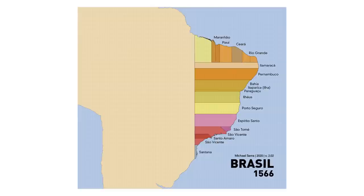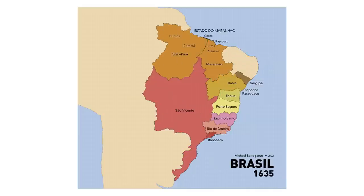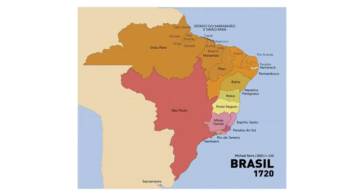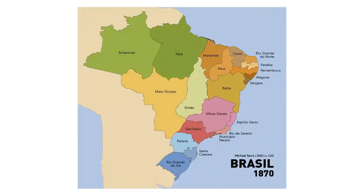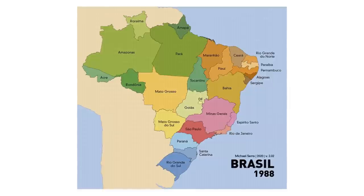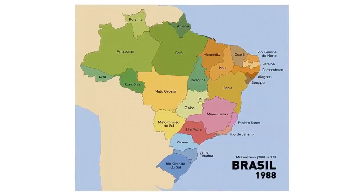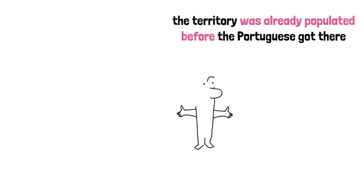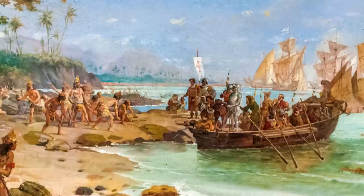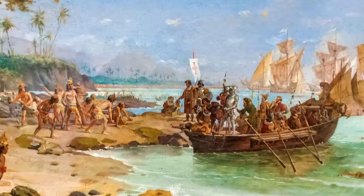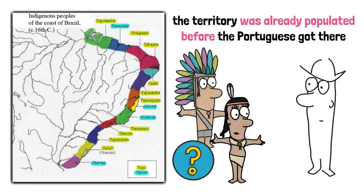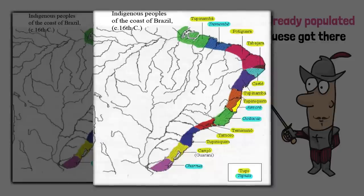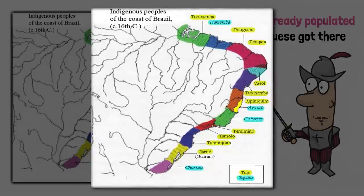It starts with Portuguese colonization, where the colony was divided into straight lines, changes to a better-mapped organization in 1580, and then the territory starts growing — sometimes with setbacks — and reorganizing itself until reaching its current form. One key detail we'll look at is the conquest and subsequent loss of Cisplatina, today known as Uruguay. Before the key moments of colonial and then independent Brazil, it's important to note that the territory was already populated before the Portuguese arrived, inhabited by various native tribes. This map shows us which tribes controlled which parts of the coast in modern Brazil.